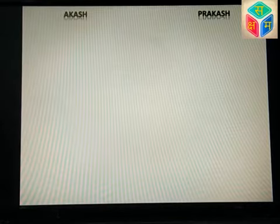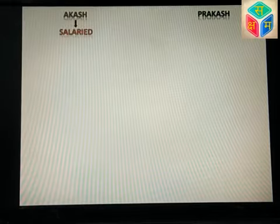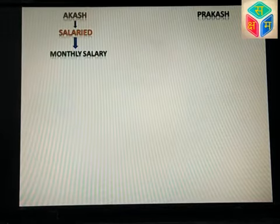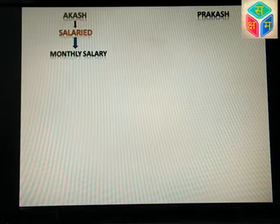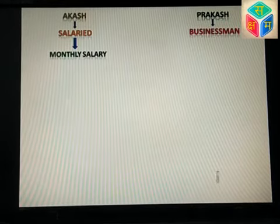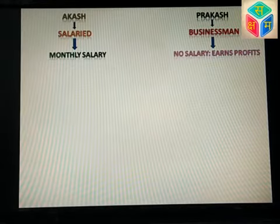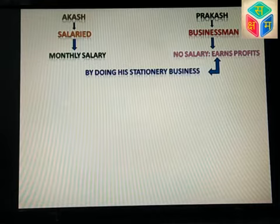There are two friends, Akash and Prakash. Akash is a salaried person and he gets a monthly salary from his company. Another friend, Prakash, is a businessman — he is not getting any salary, but as a businessman, he earns profits from his stationery business.